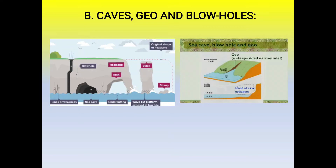When the roof of the sea cave collapses due to prolonged erosion and weathering, it produces long, narrow, deep inlets into the coastal land. Such narrow, deep, and elongated inlets are known as geos. Geos are found at Hari Hareshwar coast in the Konkan region and are common forms of wave action in Scandinavia.